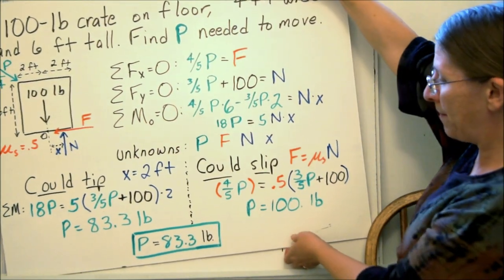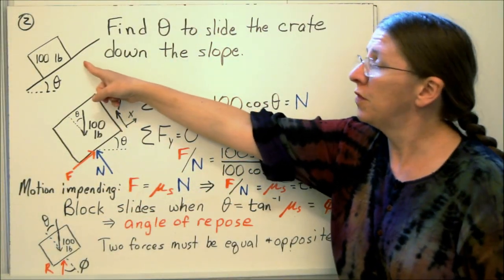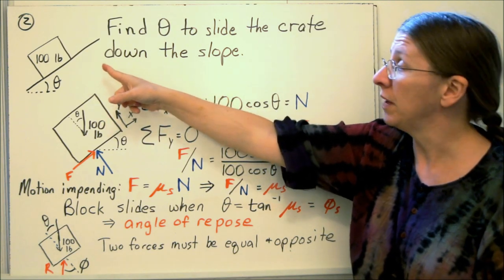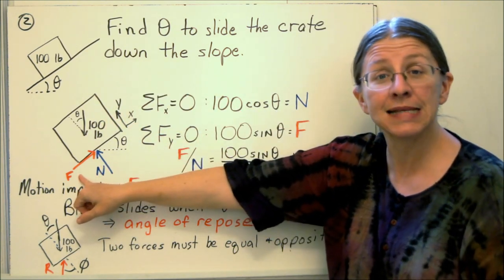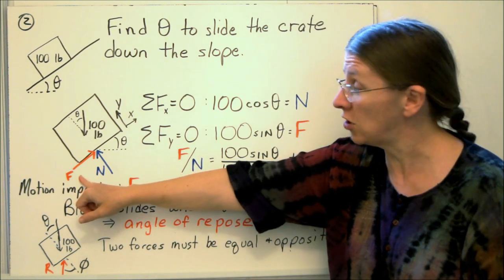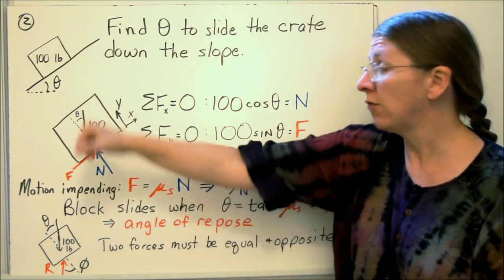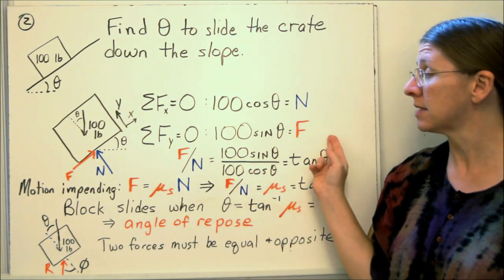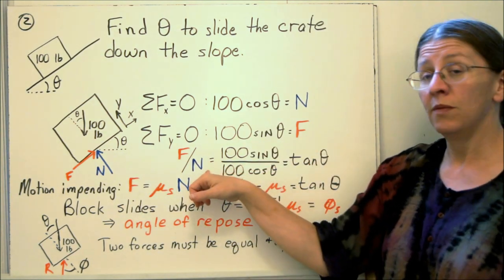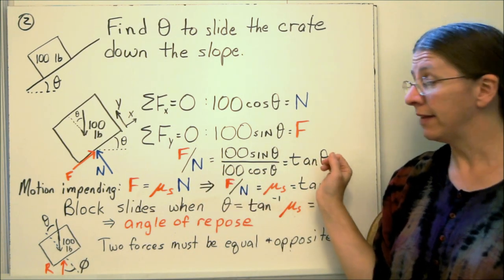The second one I want to look at is the same crate except on the slope. If you look at this crate and you put it on the slope, the friction force has to act tangent to the slope. It's along the edge. Normal has to be normal to the surface. So this is my free body diagram. And my equations of equilibrium without assuming anything look like this.